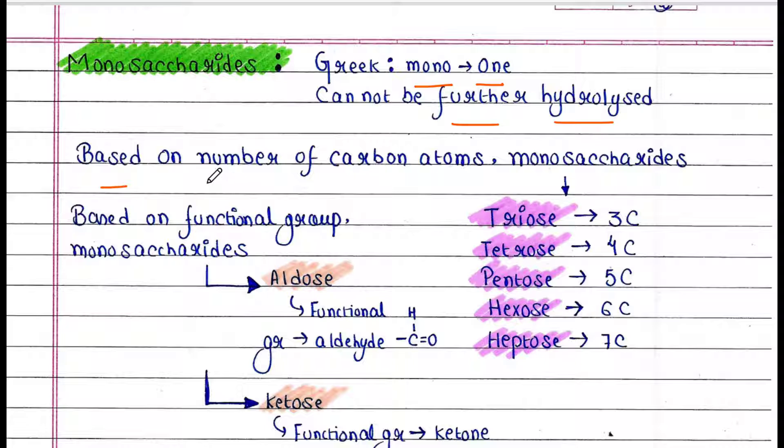Based on number of carbon atoms, monosaccharides are of different types. They are triose where only three carbons are present, tetrose where four carbon atoms are present, pentose where five carbon atoms are present, hexose where six carbon atoms are present, and heptose where seven carbon atoms are present.